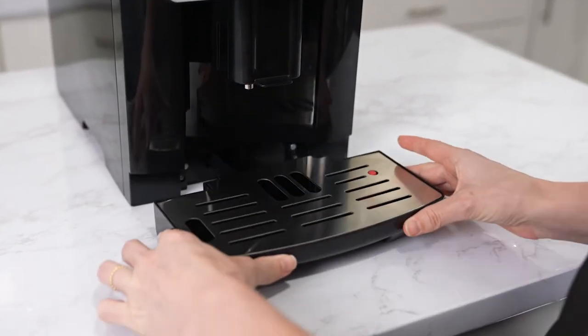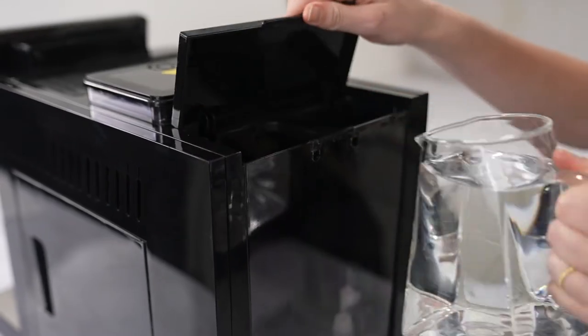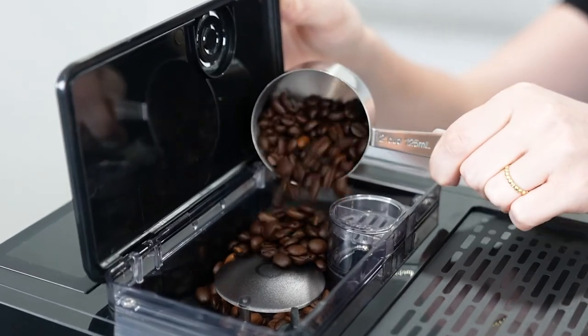Place the front drip tray on the product. Add water to the tank up to the max fill line. Add coffee beans into the bean hopper.